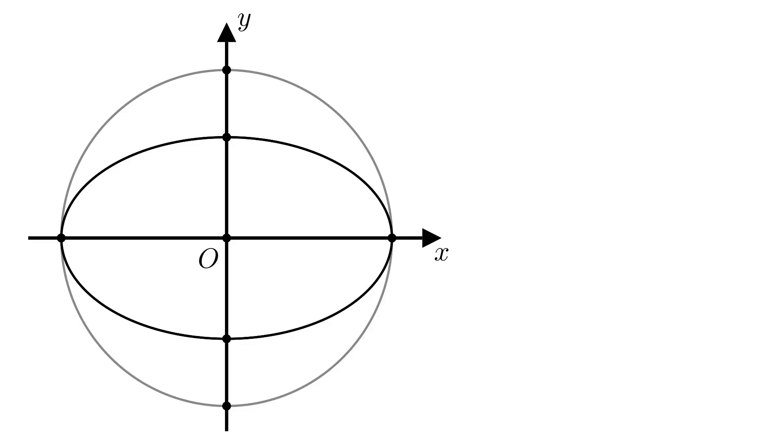we'll say that our ellipse intersects the x-axis at negative a and a, the y-axis at negative b and b, and the circle intersects the y-axis at negative a and a.